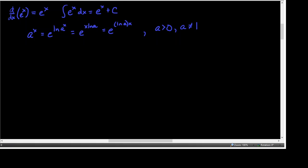And so we need to learn how to deal with those as well — how to find their derivatives and their anti-derivatives. So before we get started on that, there are some things that you should remember from college algebra. Any constant that's not 0 raised to the 0 power is 1.